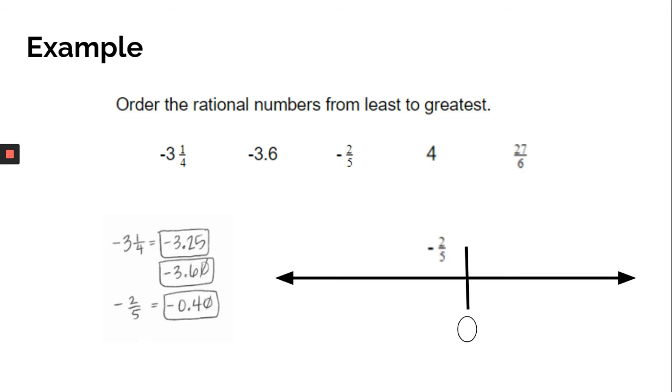Of those three, I can see that negative two-fifths is closest to zero. It hasn't even reached negative one yet, so that one is going to be closest to zero. I can place that on my open number line.